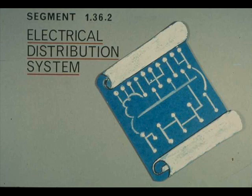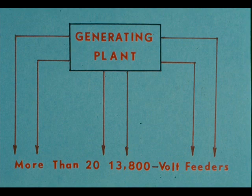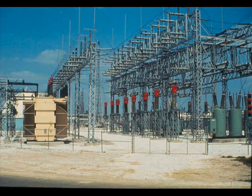For greatest efficiency in your operation of electrical equipment, you must know the electrical distribution system of your refinery or plant. Some industrial plants generate all or part of the electricity they use; others buy it from a utility company. In either case, there is at least one relatively high voltage feeder line from the generating plant or from a power transmission line. The number of feeders and the voltage they carry depend on your plant's needs. In one large refinery, more than 20 feeders carry 13,800 volts to various parts of the plant. One of these 13.8 kV feeders supplies electricity to the 14,400 horsepower driver of the refinery's largest compressor.